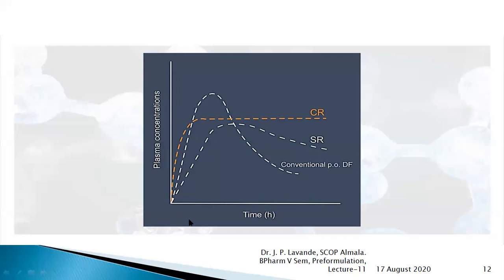In the case of sustained release, the plasma concentration rises slowly and reduces slowly in a sustained fashion. In the case of controlled release, there is an increase in drug concentration that reaches a certain plasma level and then maintains a constant level. That controlled release can be achieved with the help of polymers.